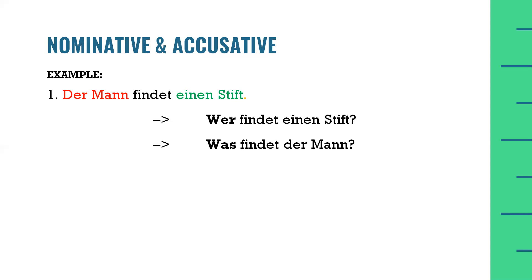The first example is: 'Der Mann findet einen Stift' — 'The man finds a pen.' In this sentence there are three different parts. The first part is 'der Mann.' The second part is the verb 'finden,' which means 'to find,' and we know that the verb will be conjugated according to the subject of the sentence. The third part is 'einen Stift' — a pen.